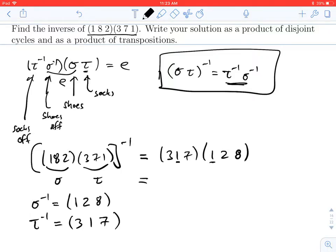All right. Let's ask, where does 1 go in total? Well, in the first permutation, 1 goes to 2. And then 2 is fixed by the second permutation. So in total, 1 went to 2. Where does 2 go? Well, 2 goes to 8, and then 8 is fixed on the second permutation. So in total, 2 goes to 8.